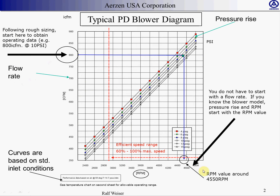That works in reverse as well. If you know what model number unit you have, and you know what pressure you have, and you know what the speed is, you can draw the same line the other way. Let's say you have a 4,000 RPM machine at 15 psi — you could draw this line over here and you would roughly have like 660 or 670 ICFM.